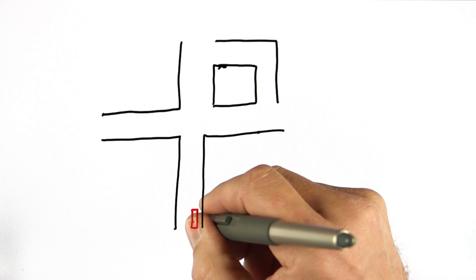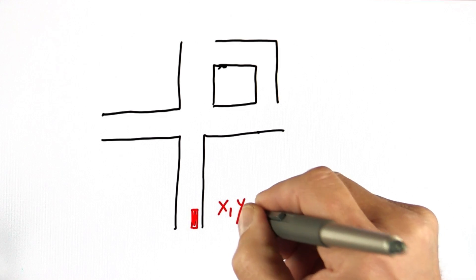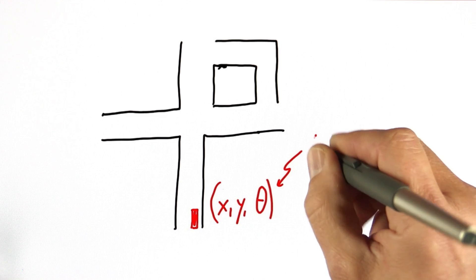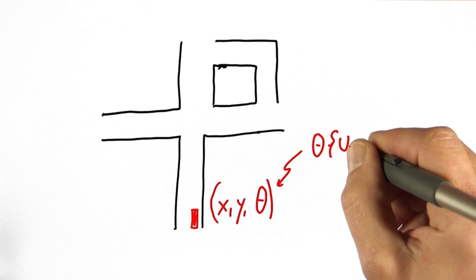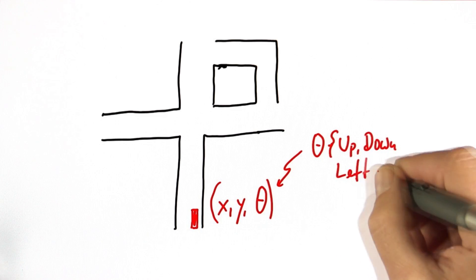Suppose we have a car down here, and this car now has a state: an x, a y, and an orientation, theta. The orientation, for simplicity, is chosen from four possible directions: up, down, left, and right.